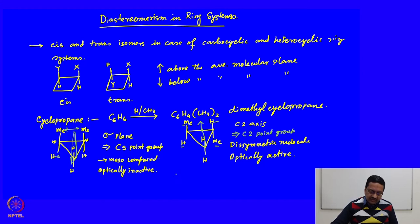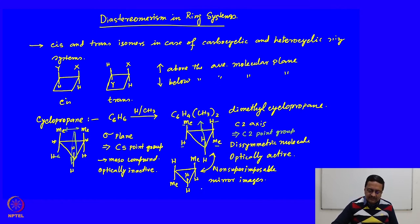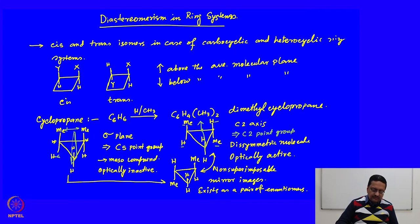If we draw the mirror image of the trans molecule, we see that the mirror image is non-superimposable — these two are non-superimposable mirror images, forming a pair of enantiomers. The cis and trans compounds are a pair of diastereomers.